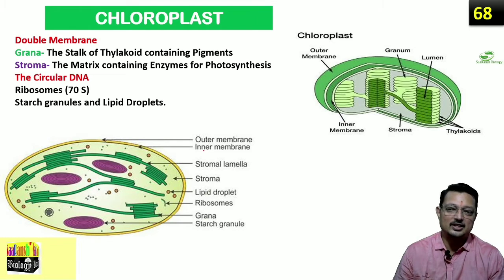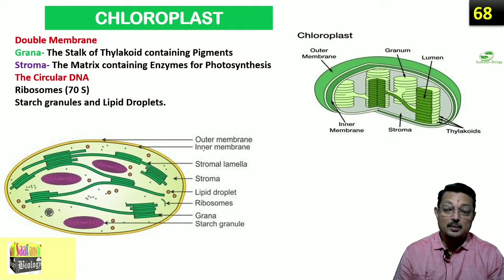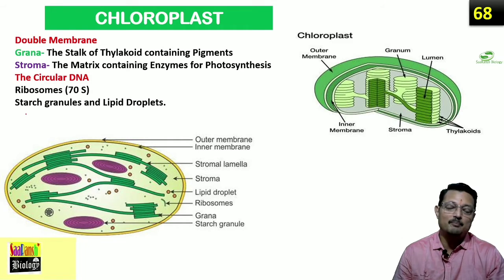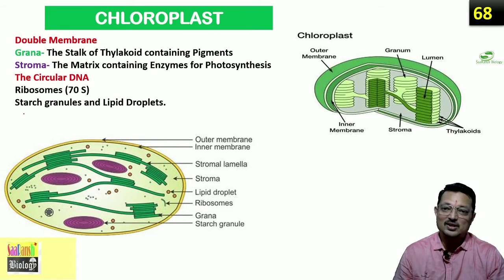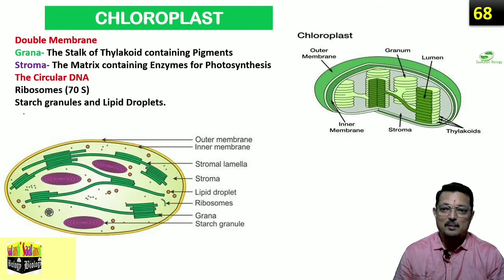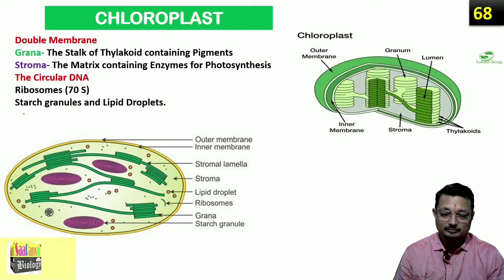Let's look at chloroplasts in a bit more detail — they are very important. Like mitochondria, chloroplasts are also a double membrane structure. However, the inner membrane of chloroplast is not folded; it is linear. So comparing mitochondria and chloroplast: both are double membrane, but mitochondria has folded inner membrane (cristae) while chloroplast's inner membrane is linear.